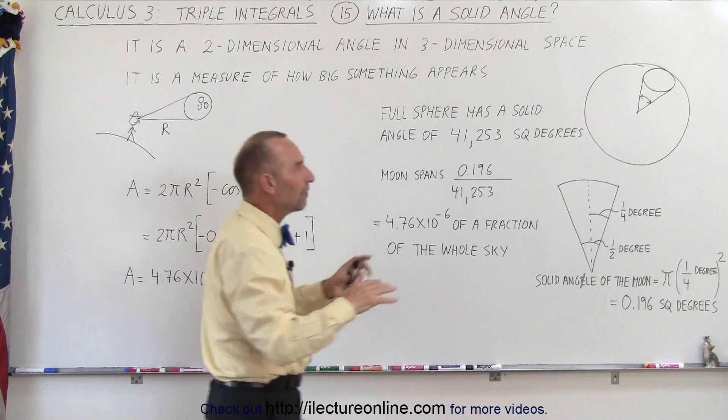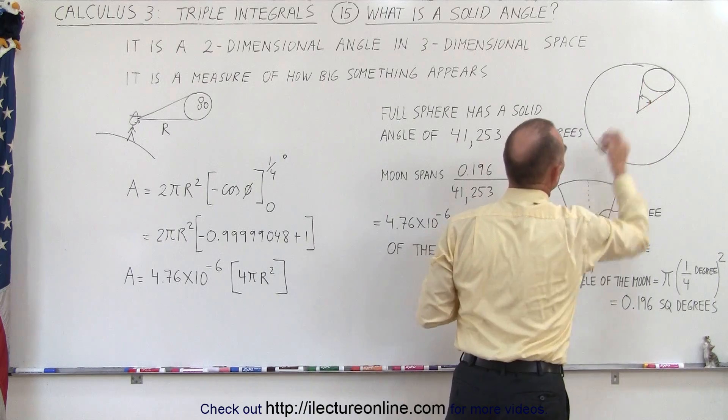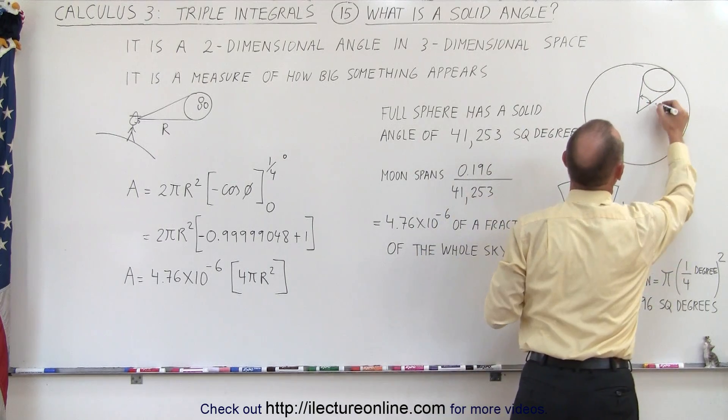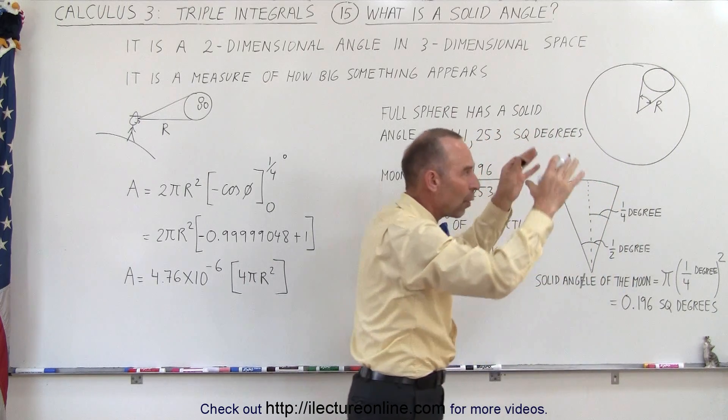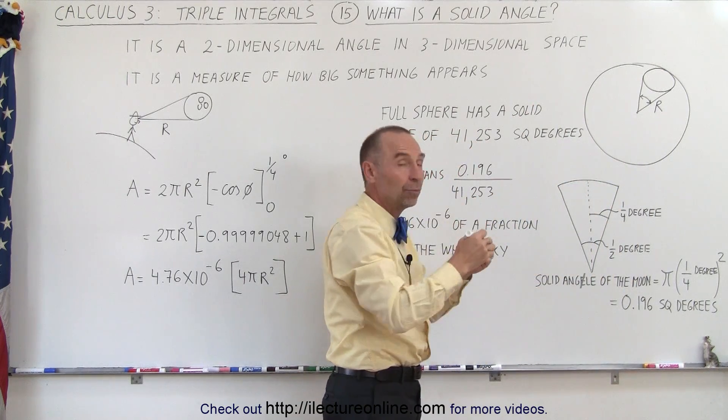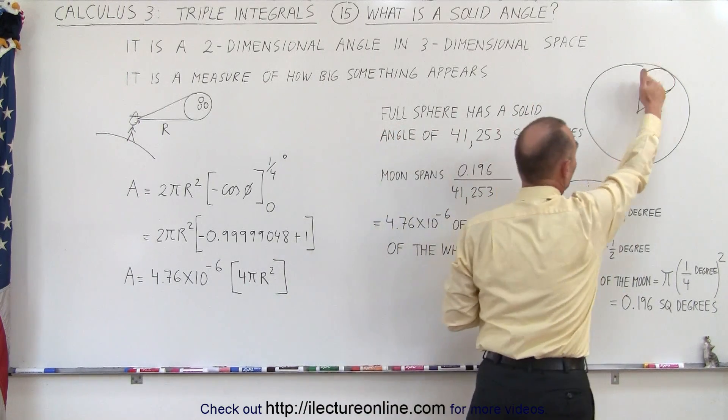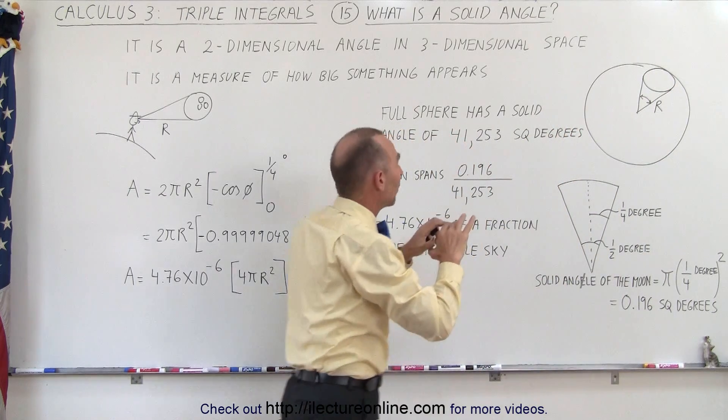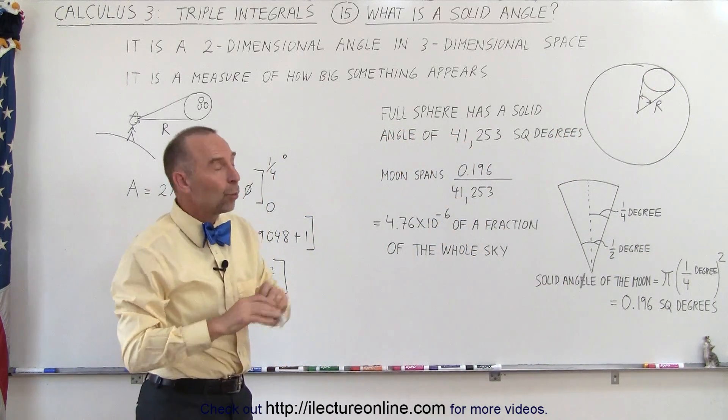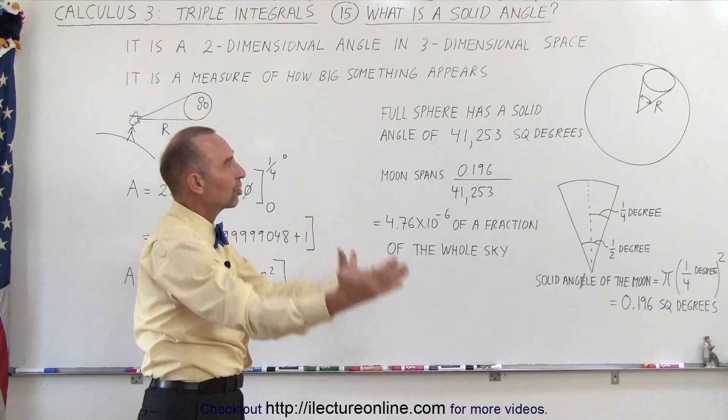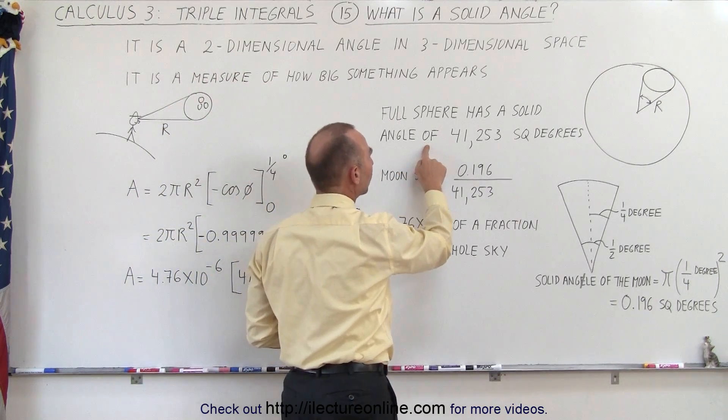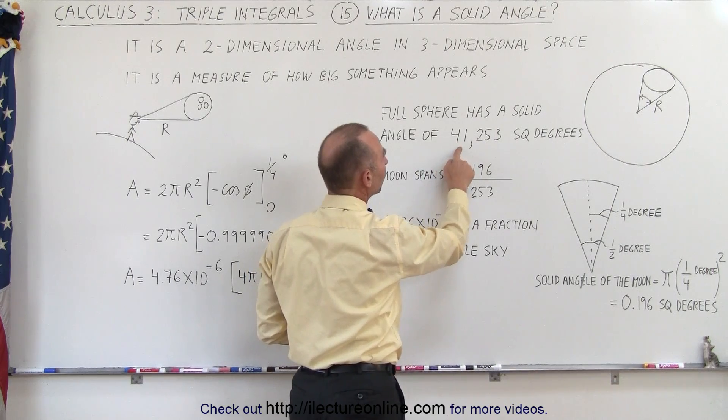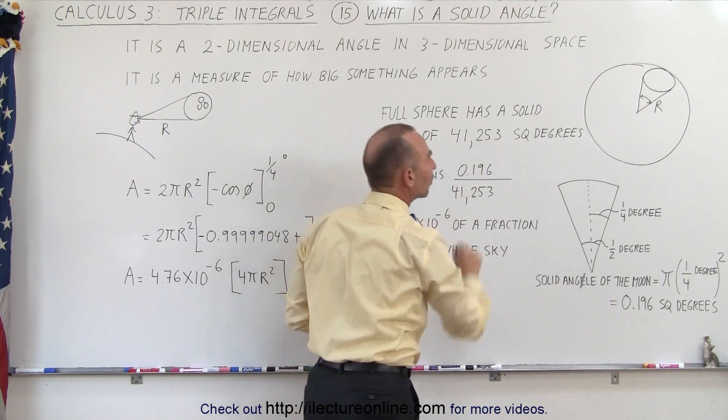So think of a full sphere right here, and we have a cone-shaped object. And let's say that the distance r is a distance to the edge of that sphere, and so we want a region there. This could be, for example, the moon. That could be the moon right there. And we can say, well, how big does that appear? Well, if we take the entire sky, all the way around in all directions, the total angular size of the sky is 41,253 square degrees.